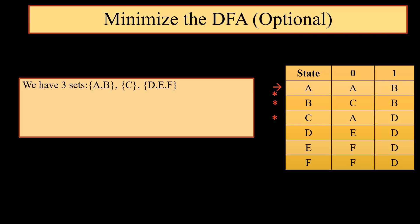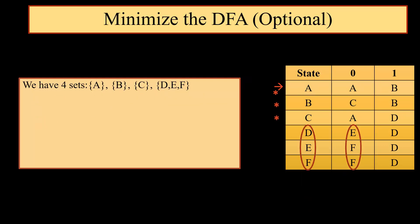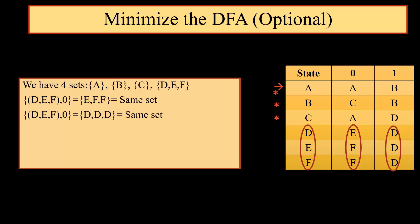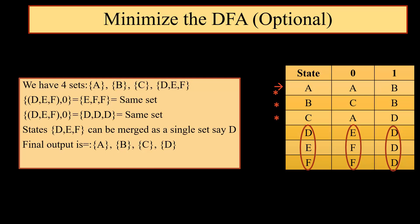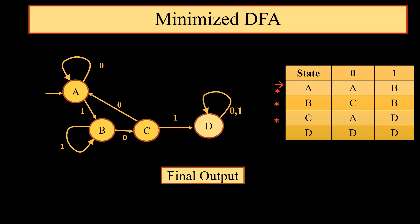Now we consider {A, B} as a common set. {A, B} on 0 gives us A and C, which are not part of the same set. So we split {A, B} into 2 parts: {A} and {B}. Now we have 4 sets: {A}, {B}, {C}, and {D, E, F}. We consider {D, E, F} as a single state and find {D, E, F} on 0, which gives E, F, F — going to the same set {D, E, F} itself. And {D, E, F} on 1 gives D only. That means we can combine all 3 states into a single state D. So the final output is that we have only 4 states: A, B, C, and D. This is the minimized DFA.